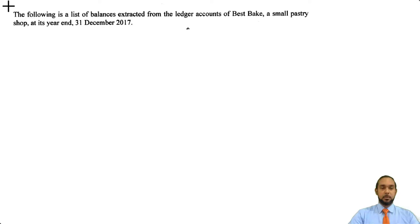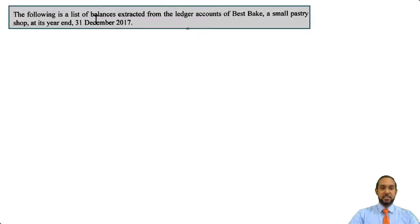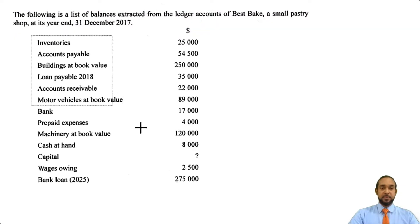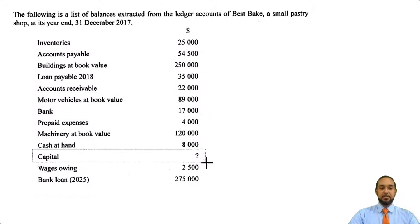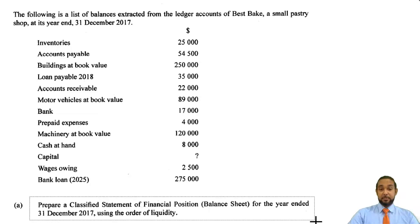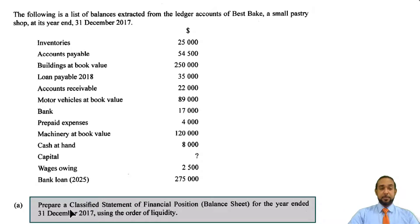So let's take a look at the question. They're telling us that the following is a list of balances extracted from the ledger accounts of Best Bake, a small pastry shop, at its year end, 31st December 2017. They give us this list of balances — we have some assets, some liabilities — and we'll notice that the capital figure is missing. Now what they want us to do is to prepare a classified statement of financial position, or balance sheet.